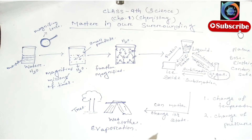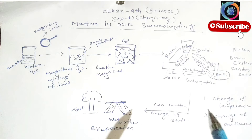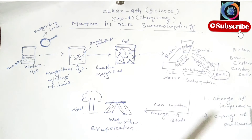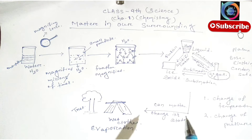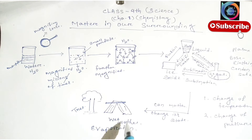One thing comes to mind: if we do not change its pressure and temperature, can matter change its state? Think about it deeply. Yes, this is possible — matter can change its state. This is our wet cloth. If we dry it, the wet cloth loses its water particles, and these liquid water particles change into gas, and our wet cloth dries off. This process is called evaporation.